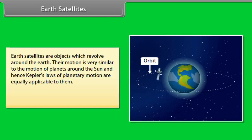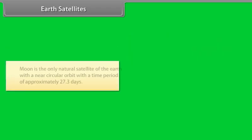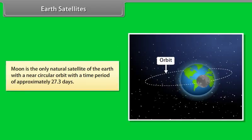Earth satellites. Earth satellites are objects which revolve around the earth. Their motion is very similar to the motion of planets around the sun and hence Kepler's law of planetary motion are equally applicable to them. Earth satellites orbits around the earth are circular or elliptic. Moon is the only natural satellite of the earth with a near circular orbit with a time period of approximately 27.3 days.